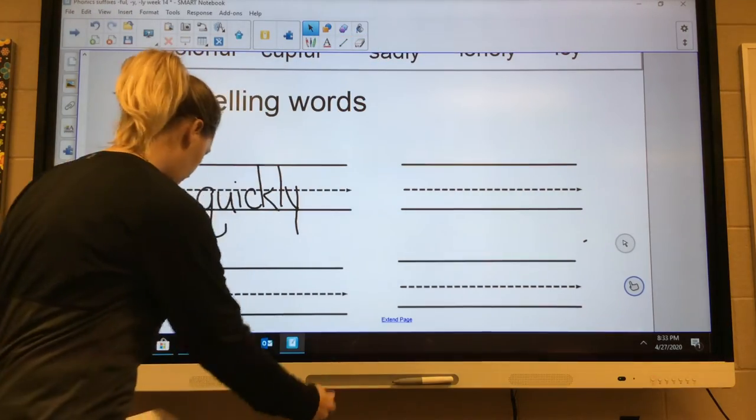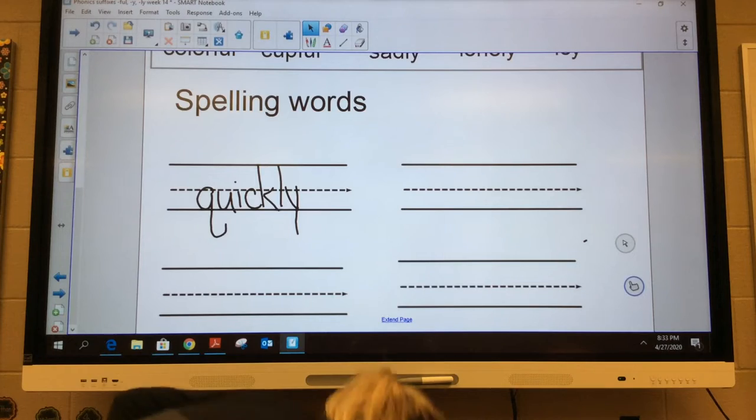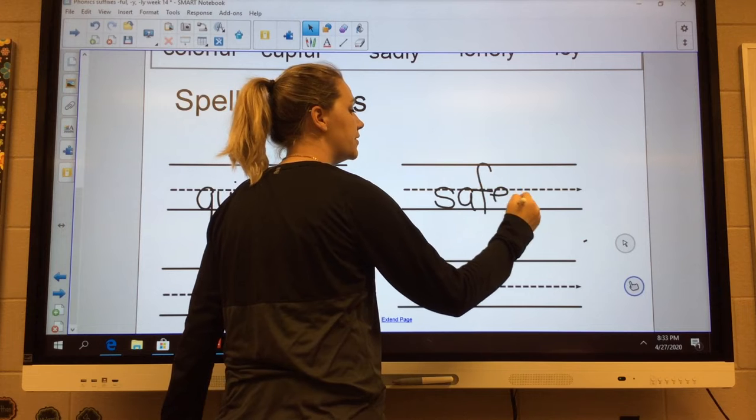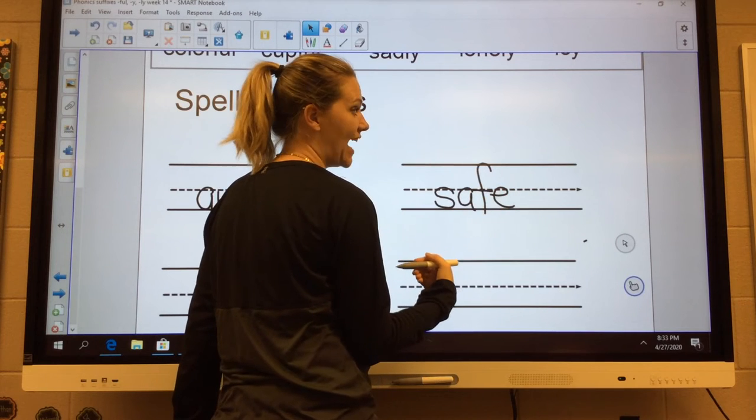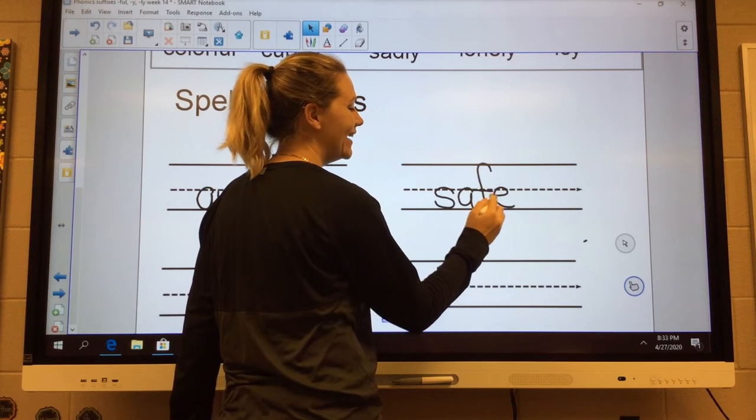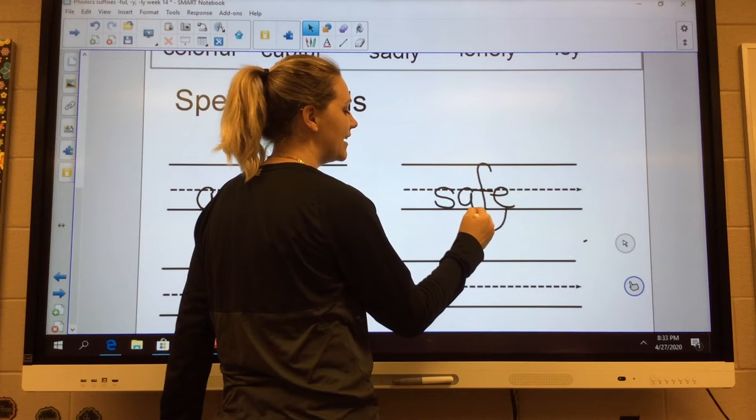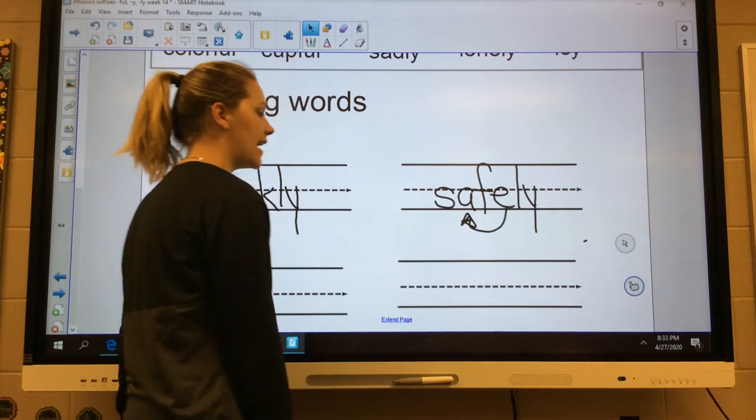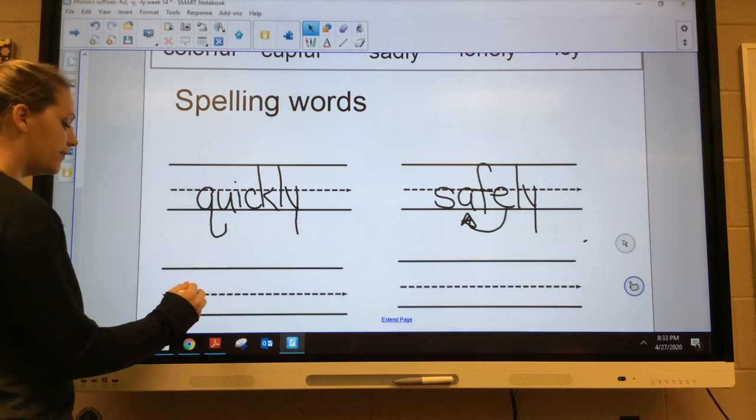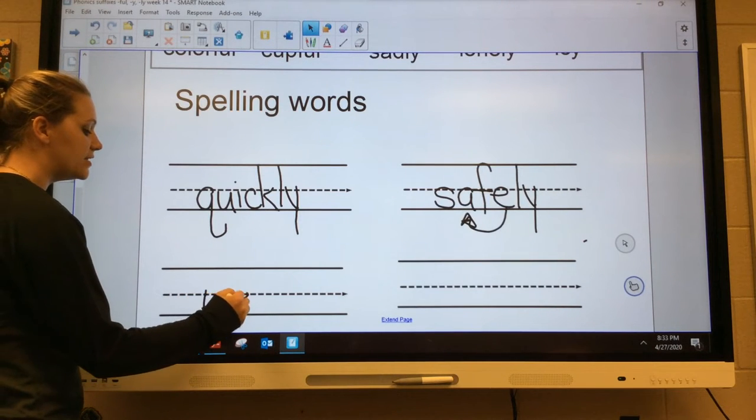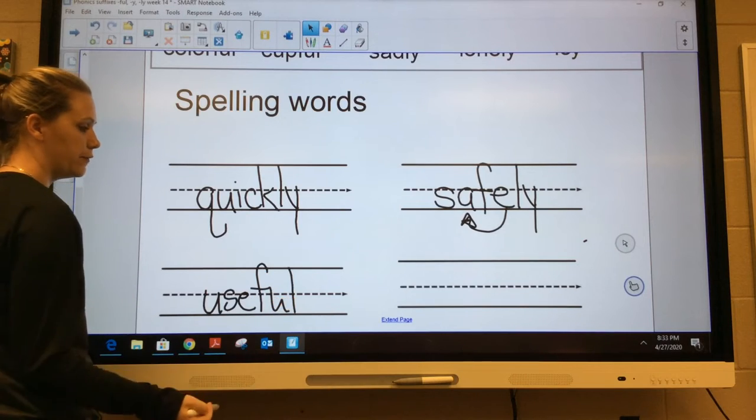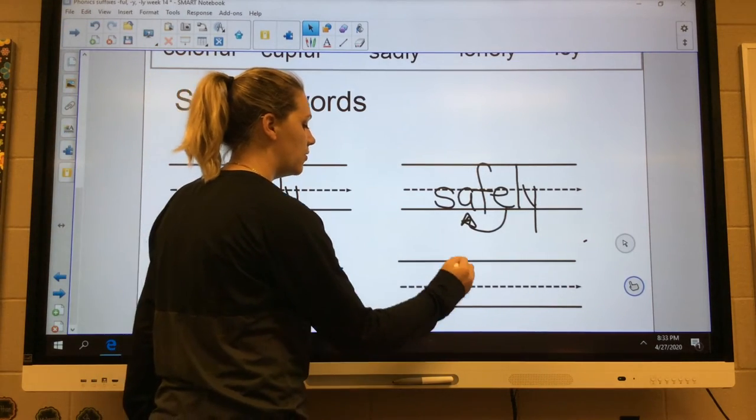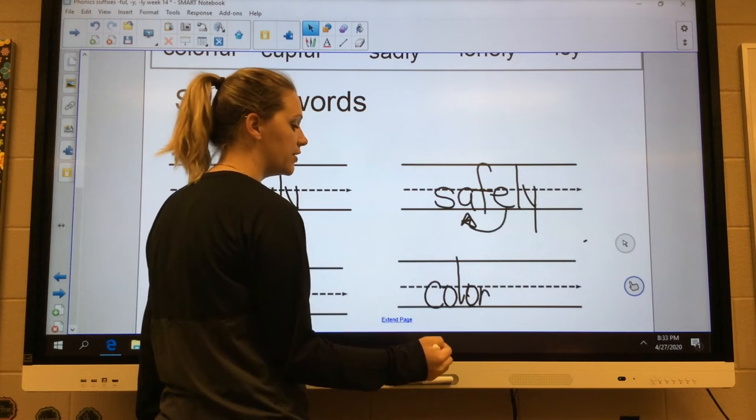Number two: safely. Safely, safely. Super silent E is making the A say its name. Safe-ly with our ending at the end. Useful: U-S-E is use, F-U-L. Useful.